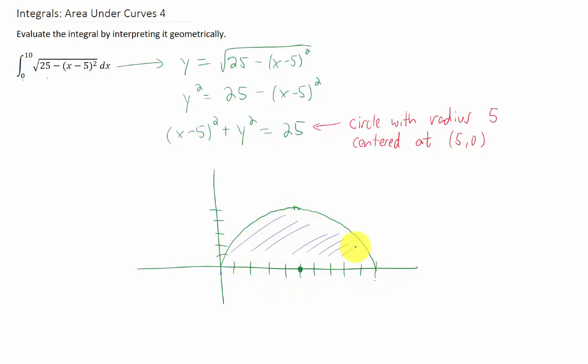So this integral just represents the area of this semicircle here. Well the area of a circle is pi r squared. The area of a semicircle is one half pi r squared. All we need to do is plug in our radius of five and we're good to go. We get an answer of 25 pi over two or 25 halves pi and that should do it.